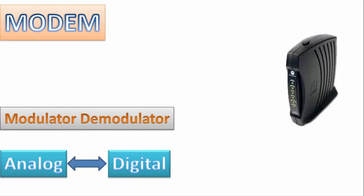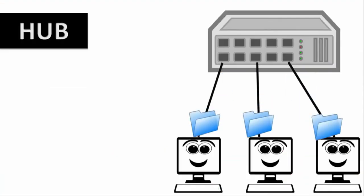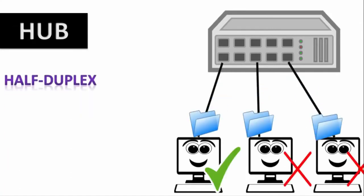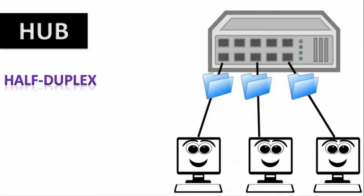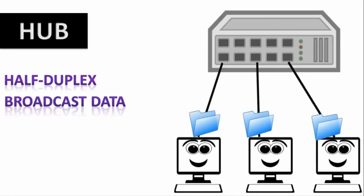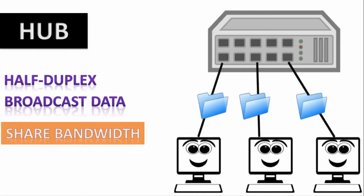The next device is a hub. A hub is a dumb device which is not used nowadays. It is a half-duplex device, meaning it can only communicate one at a time. The main function of a hub is that it broadcasts data on all its ports.